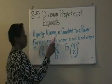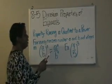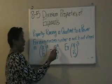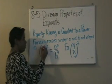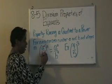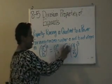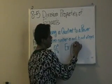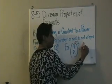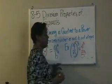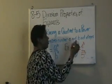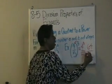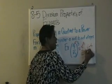Now we are on the property of raising a quotient to a power. For every non-zero number a and b, and integer n, a over b in parentheses raised to the nth power equals a to the nth power over b to the nth power. When you have parentheses, you raise everything to that power. For example, 4 over 5 raised to the 3rd power gives you 4 to the 3rd power over 5 to the 3rd power. That's 4 times 4 times 4, which is 64, over 5 times 5 times 5, which is 125. So 64 over 125 is your final answer.